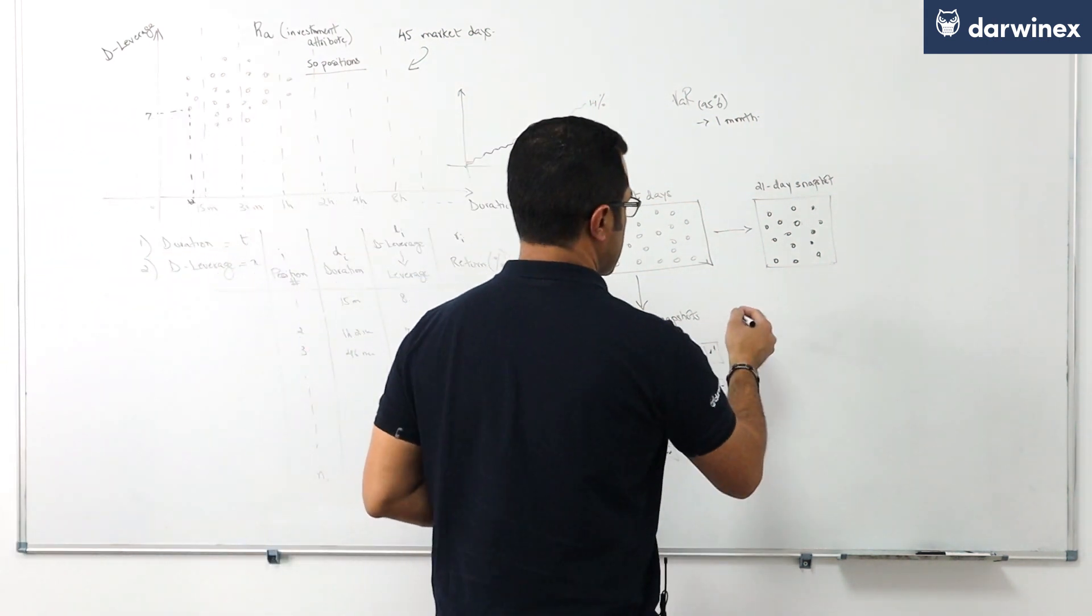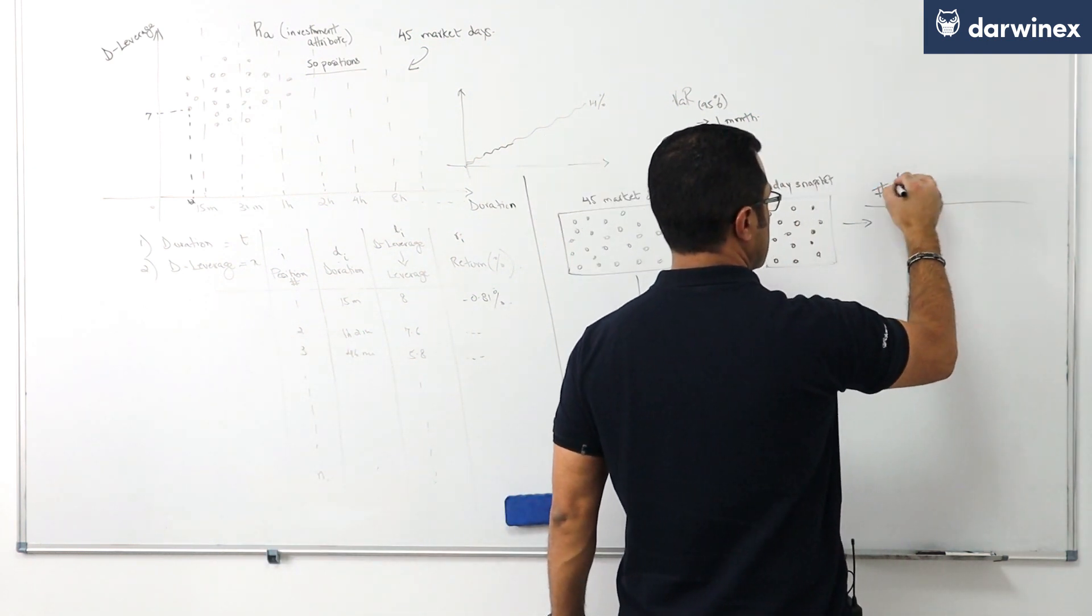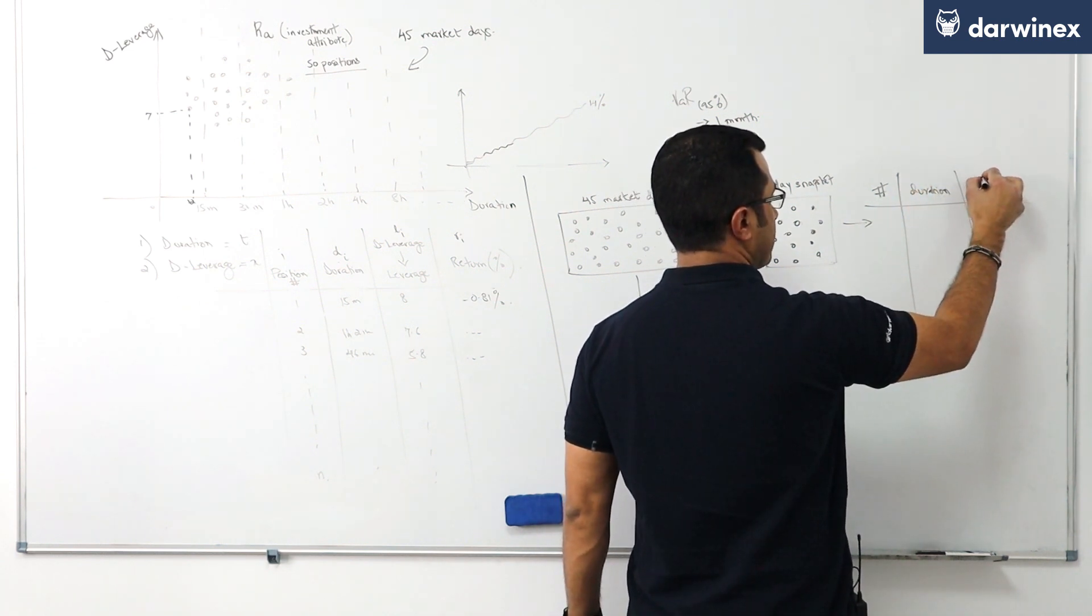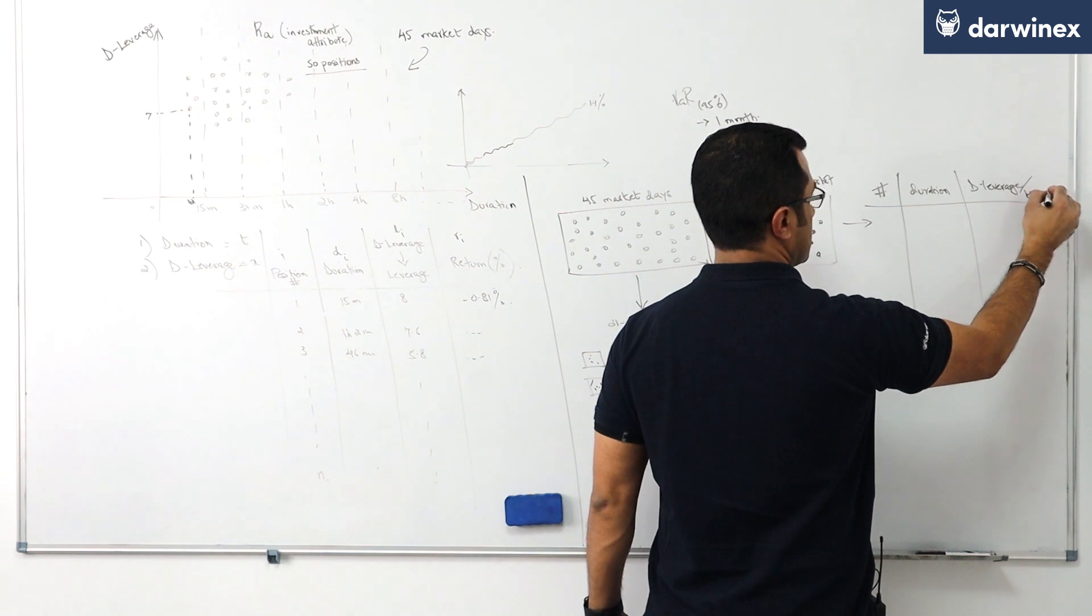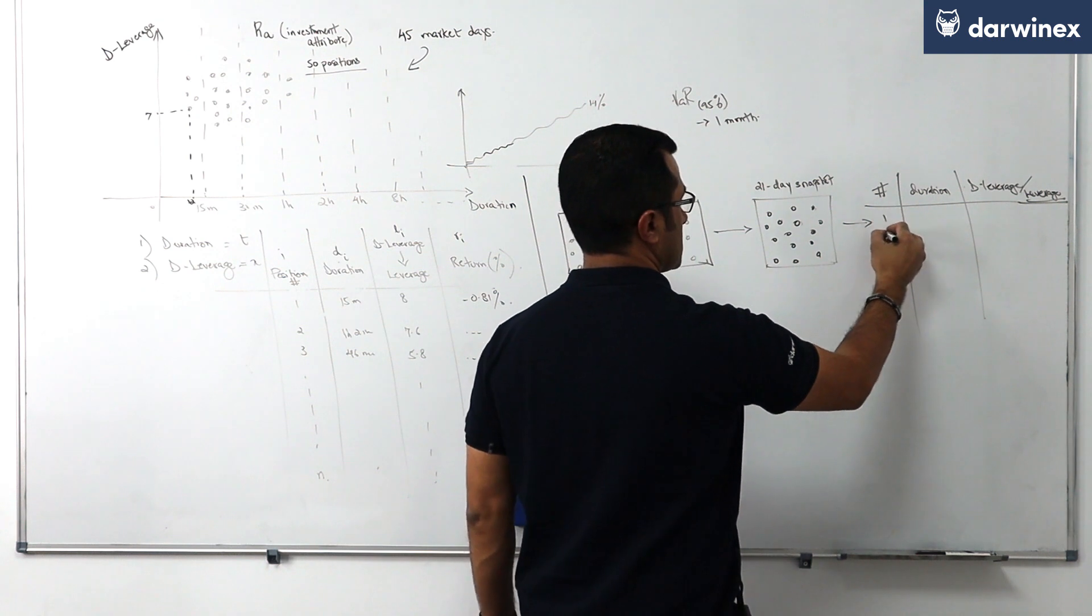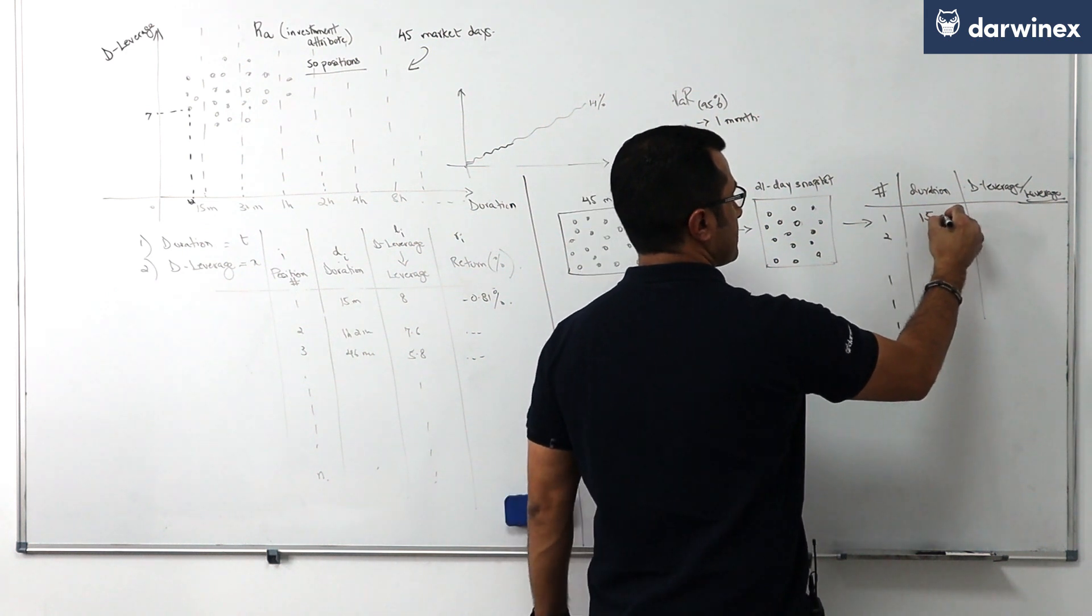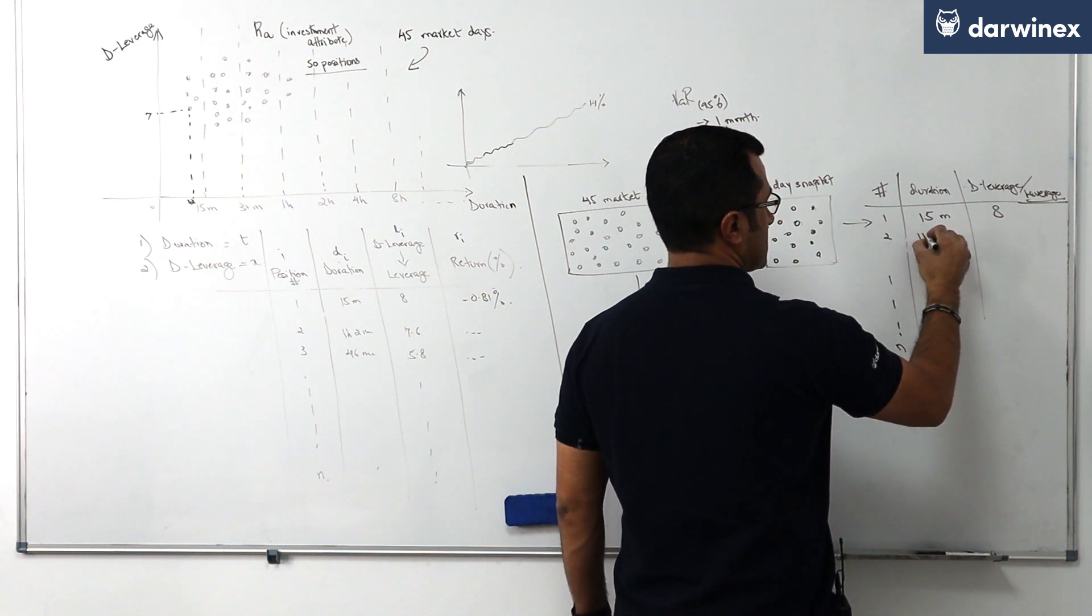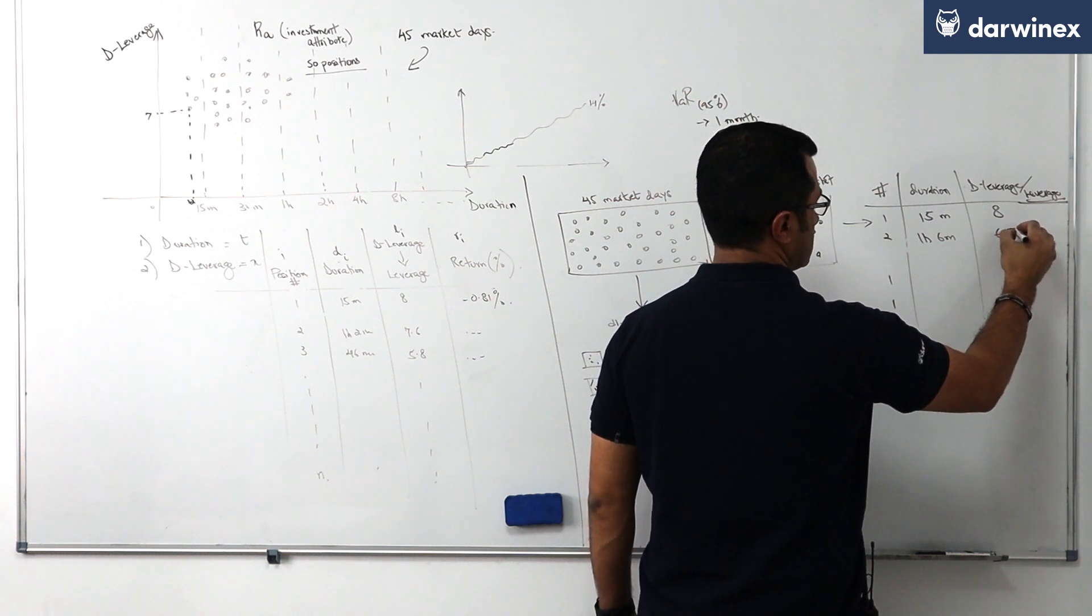Here, with each snapshot, we will then have this sort of table where we have the number of the position, the duration of the position, the d leverage of that position—hence leverage if taking an equivalent trade on the Euro Dollar—1, 2, all the way through to n. Let's imagine the first position is 15 minutes and it took a d leverage of 8, hence an 8-to-1 leverage trade on the Euro Dollar. Let's say this was 1 hour 6 minutes and that was 6.7, and so on and so forth.